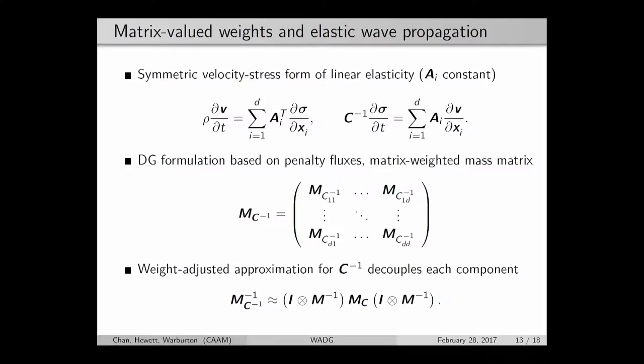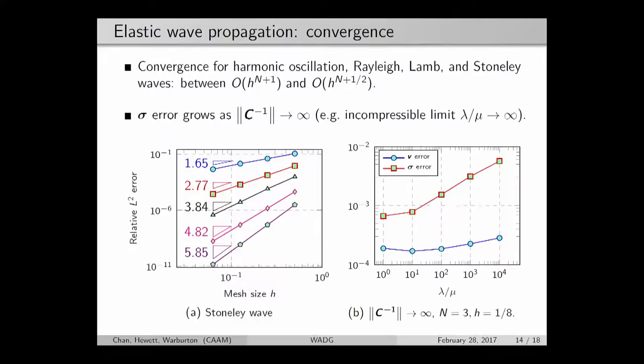We apply this approach to come up with a DG method for linear elasticity. If we test on some simple problems—we have Rayleigh waves, LAM waves, Stonely waves—in all cases we basically see as-expected convergence. For order one, we see about 1.5 to 2. For order two, between 2.5 and 3. Same for order three, four, five, and so on. We see something between the optimal rate of convergence that we expect and the estimated rate that we can actually prove.